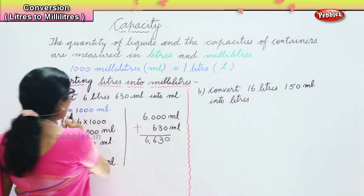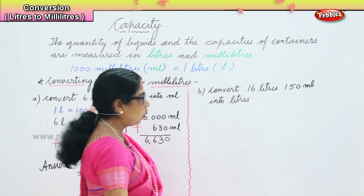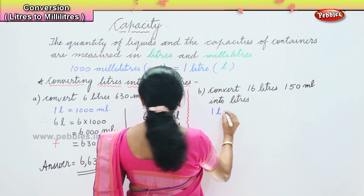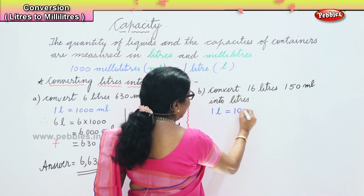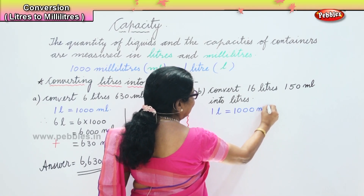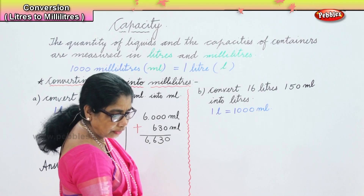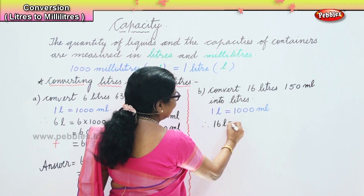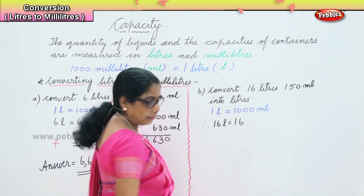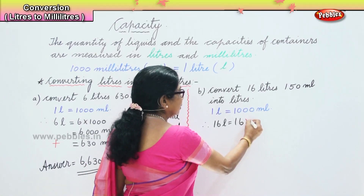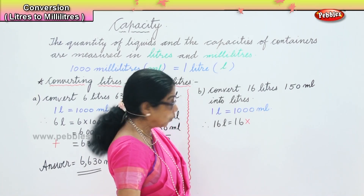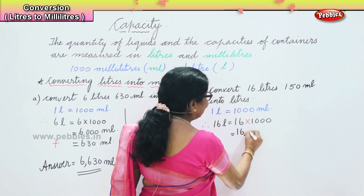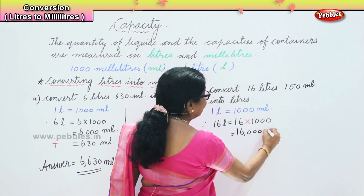Now what we need to write: one liter is equal to one thousand milliliters — that we have to remember, write it down. One liter is equal to one thousand milliliters. Now therefore, how many liters do we have? Therefore, sixteen liters equal to sixteen into one thousand, and that will give us sixteen thousand milliliters.